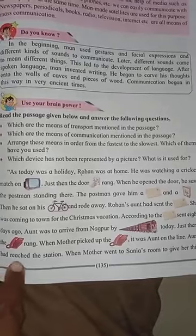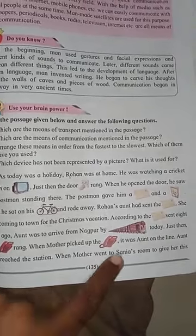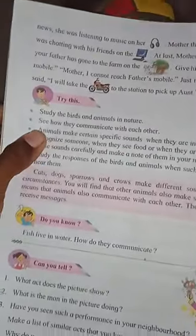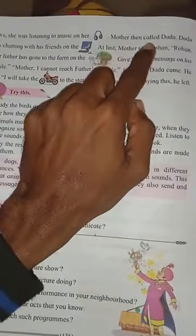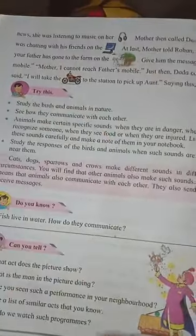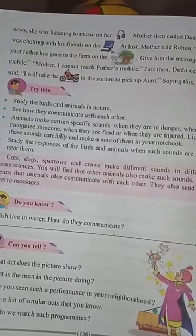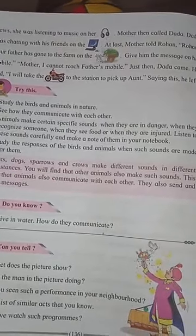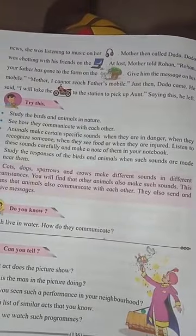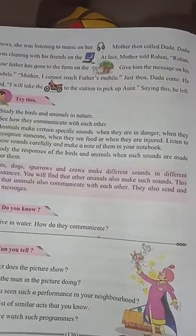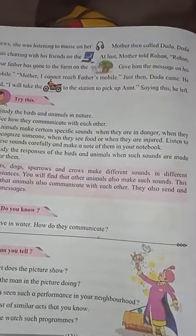Just then the telephone bell rang. When the mother picked up the telephone, it was the aunt on the line - aunt had reached the station. When mother went to Sanya's room to give her this news, Sanya was listening to music on her headphone. Mother then called Dada, and Dada was chatting with a friend on the internet.